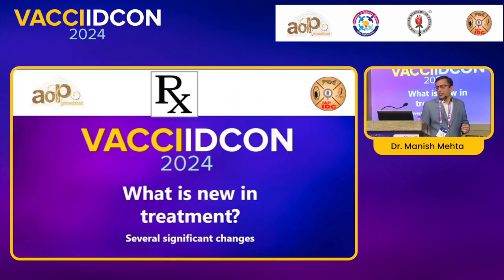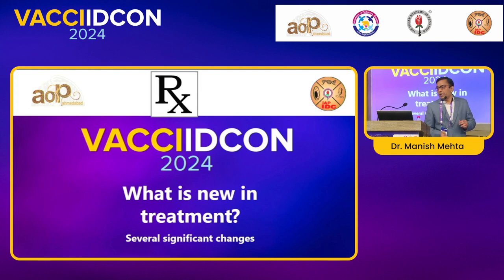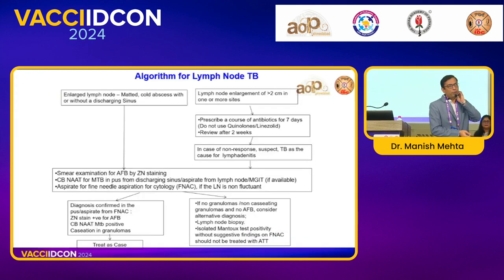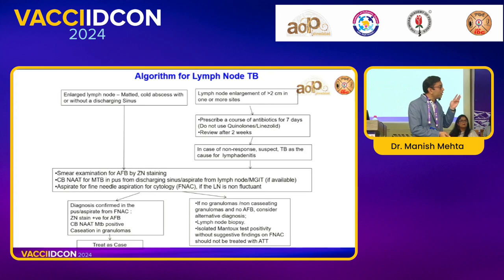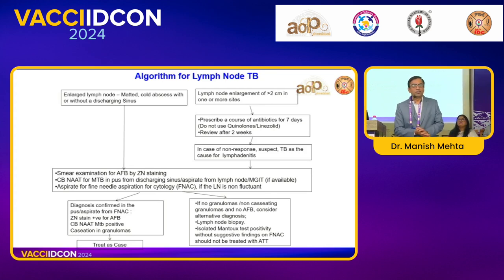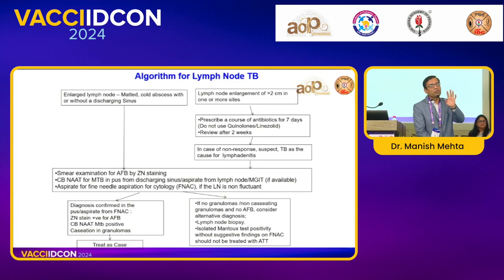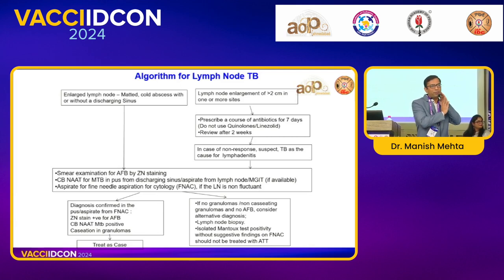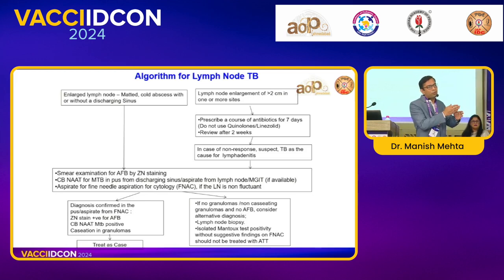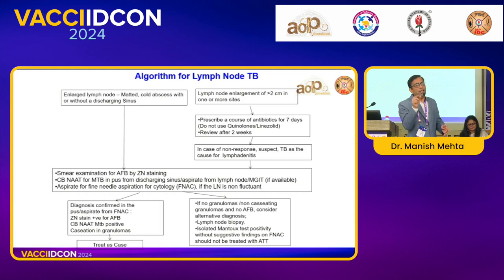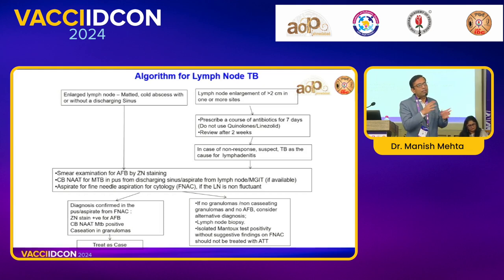Lymph node tuberculosis is very common in day-to-day practice. There are two types of lymphadenopathy: classical cold matted lymph node with abscess formation — directly go for FNAC and NAT. If positive, treat. If negative, again send better samples. If it is not classical lymphadenopathy, give antibiotic trial. If no improvement, again go for investigation. If positive, treat. Otherwise, manage as clinically diagnosed case.